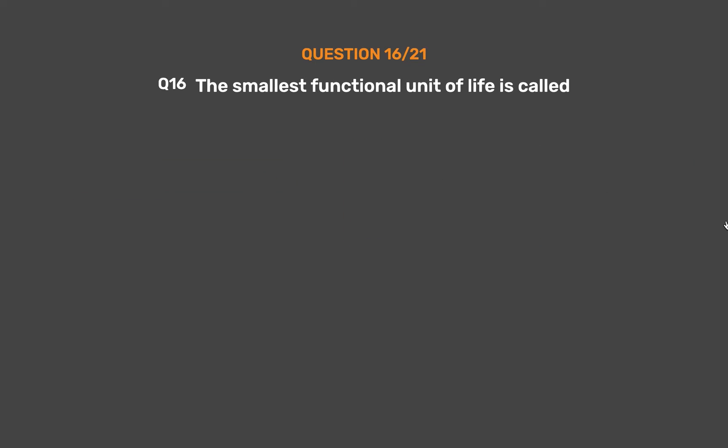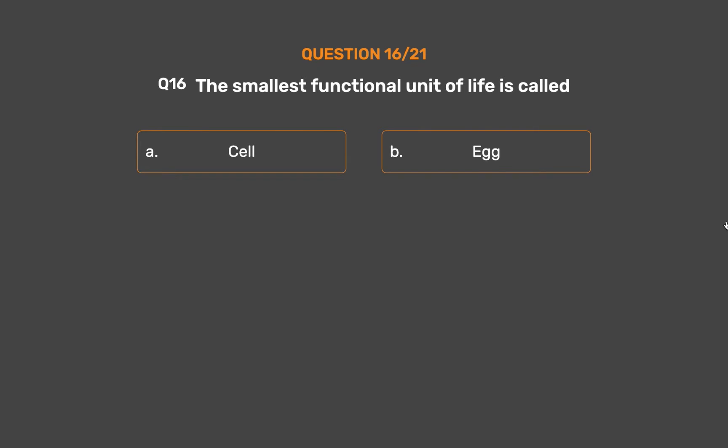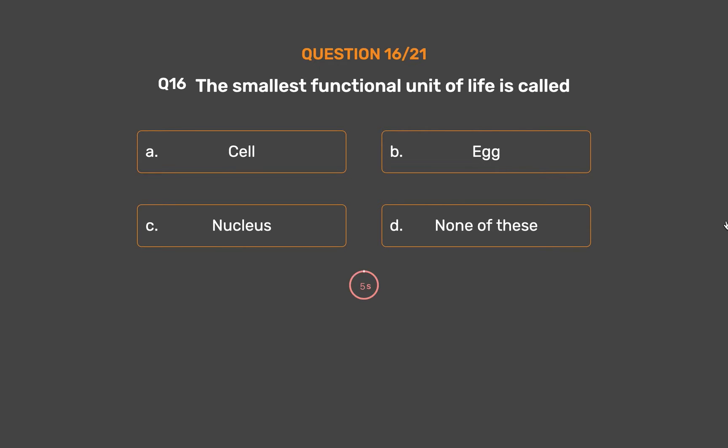Question No. 16: The smallest functional unit of life is called. Option A: Cell. Option B: Egg. Option C: Nucleus. Option D: None of these.